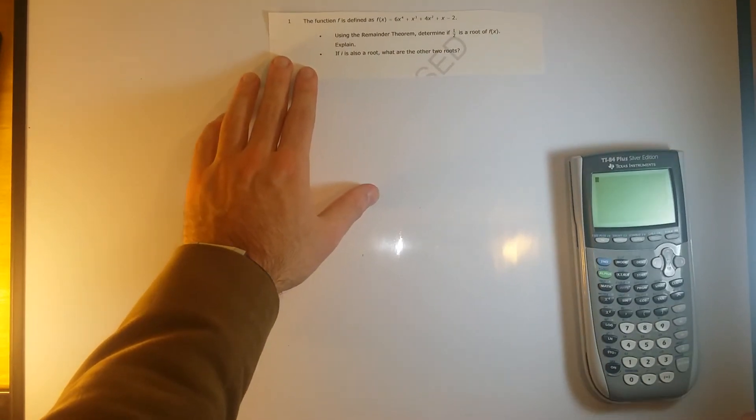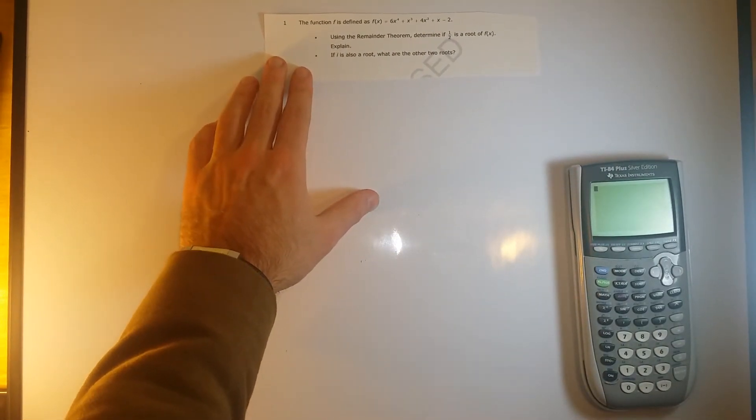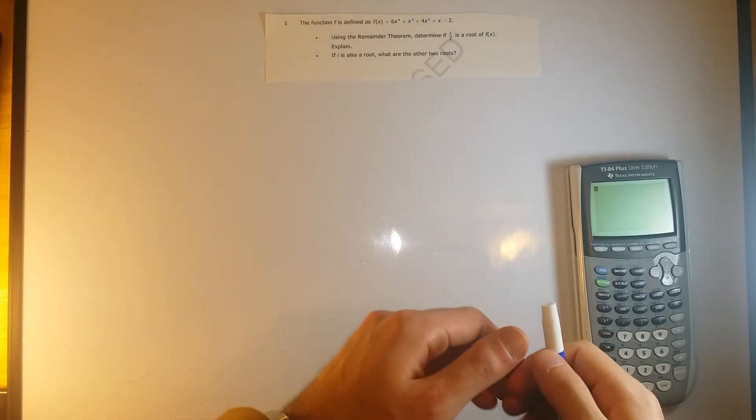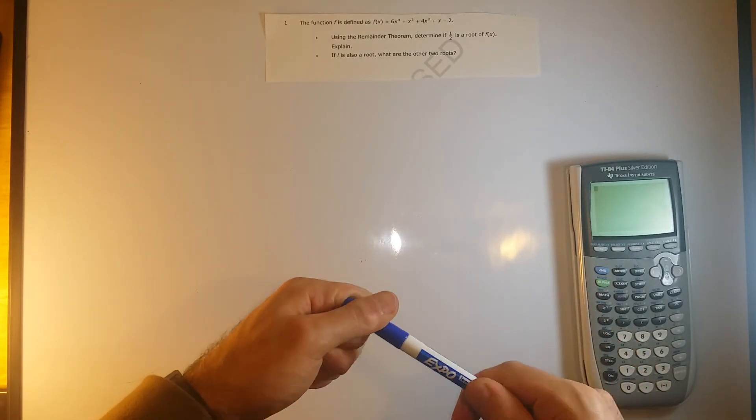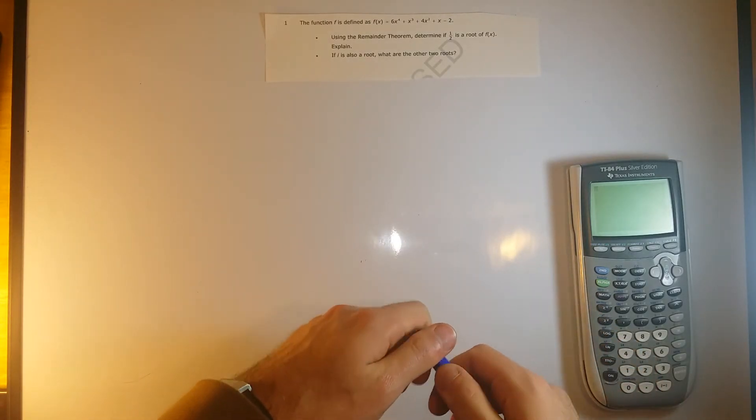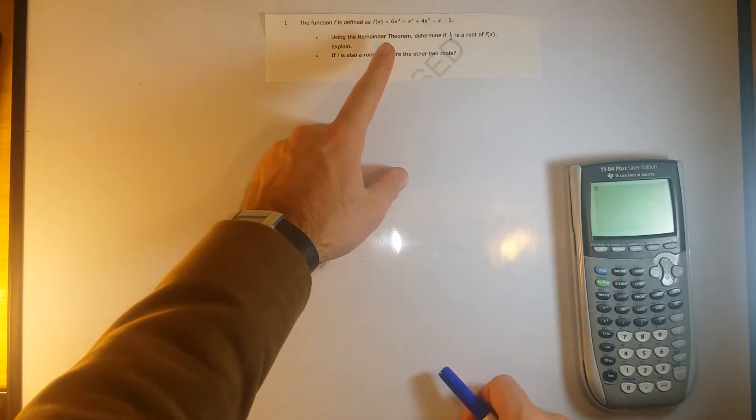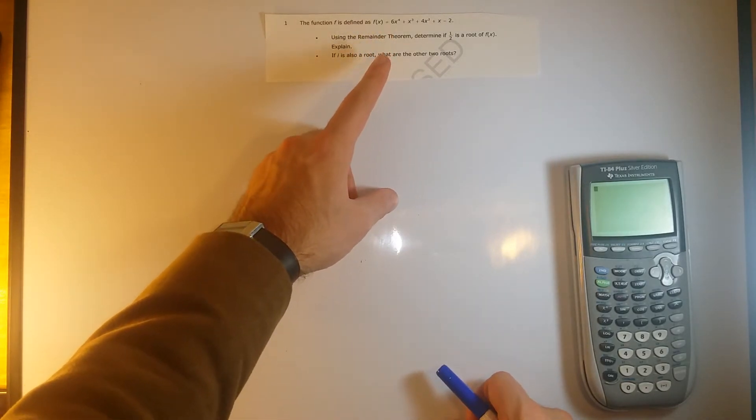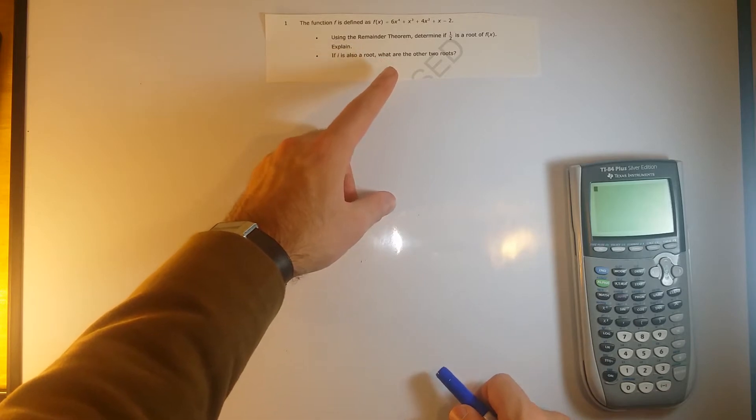Problem number one. This is problem number one on the short answer, so not multiple choice anymore. It says the function f is defined as f of x equals 6x to the 4th plus x to the 3rd plus 4x squared plus x minus 2.